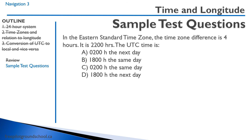In the Eastern Standard Time Zone, the time zone difference is four hours. It is 2200 hours. The UTC time is 2200 plus four, and so it's going to be the next day, 0200.